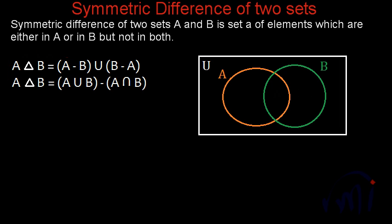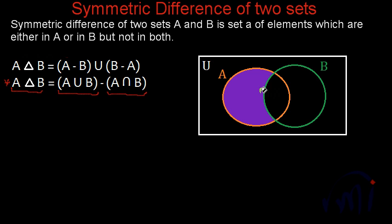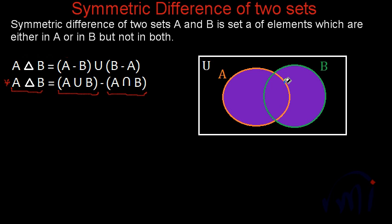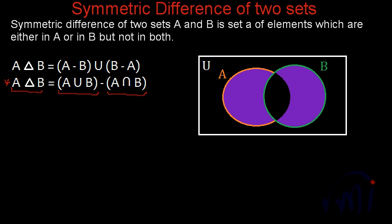The second way to find the symmetric difference: A△B = (A∪B) - (A∩B). A union B contains all the elements of A and B. If we remove the intersection area — the overlapping region — from A union B, we get the symmetric difference of A and B, which represents all elements either in set A or in set B but not in both.